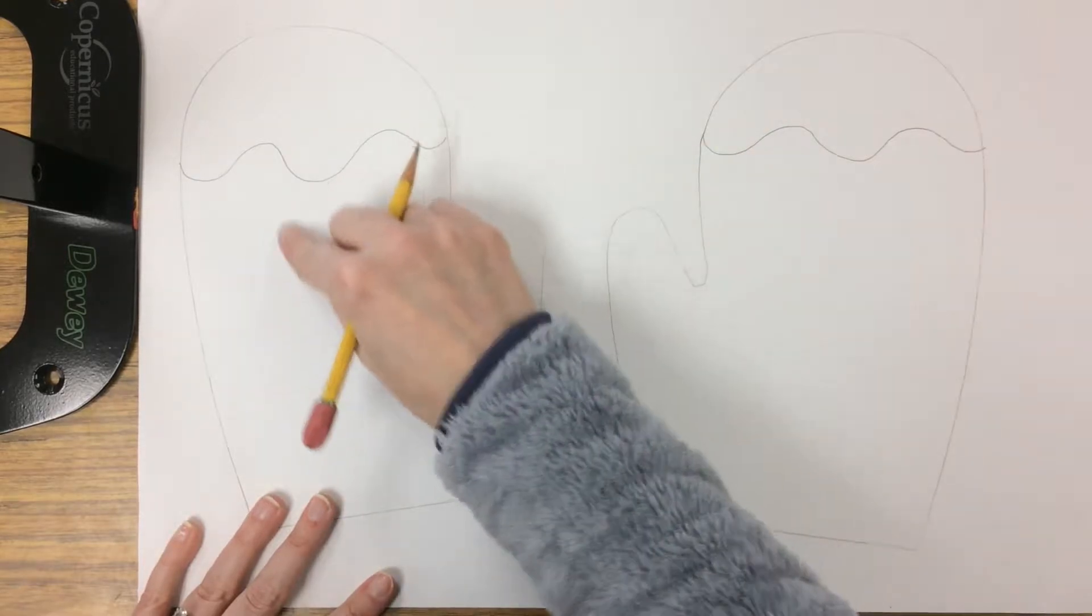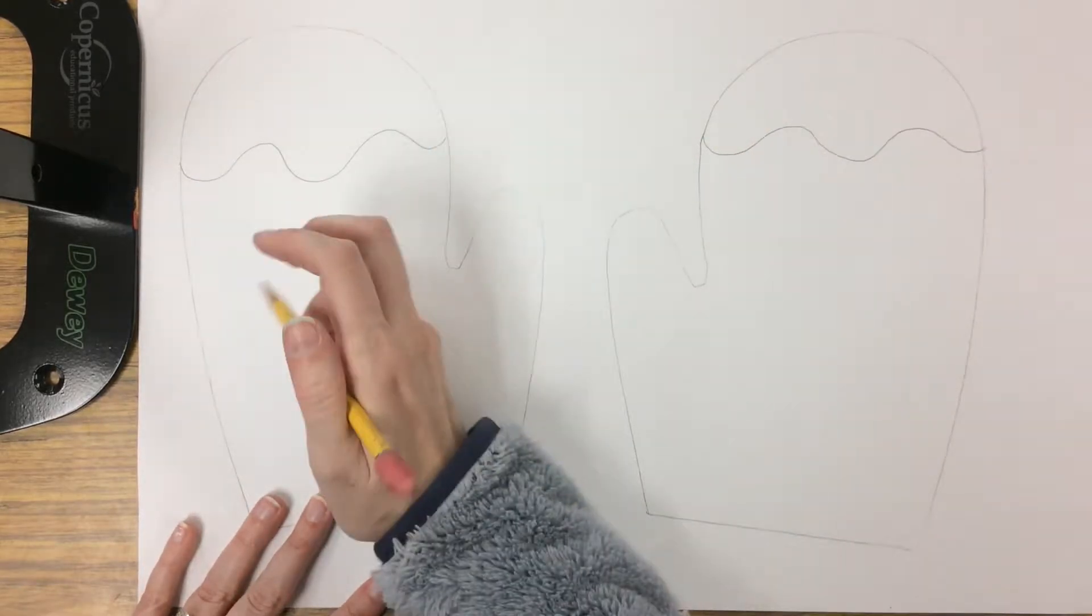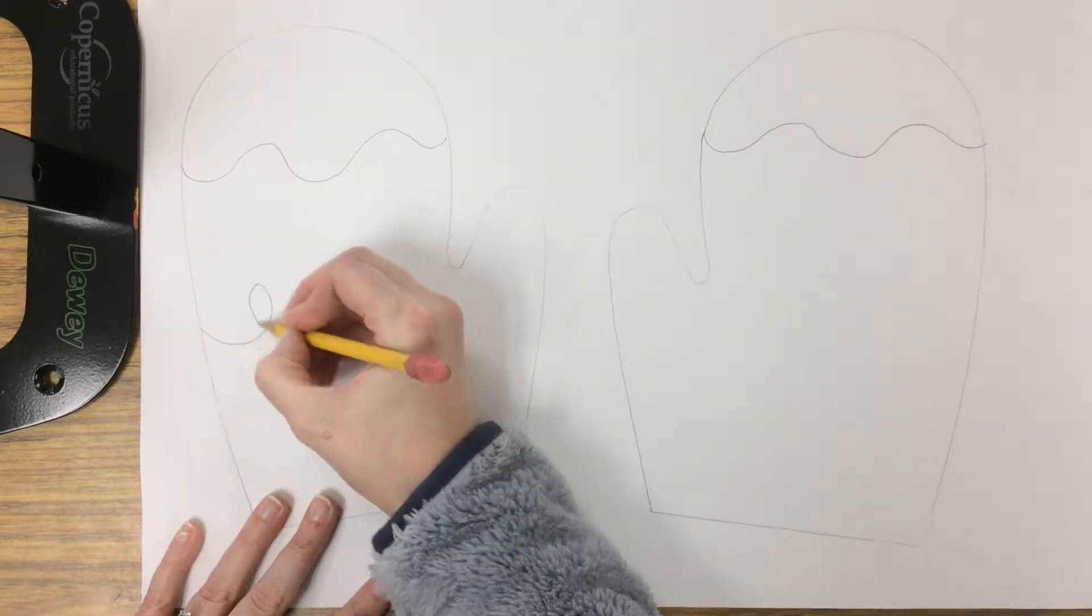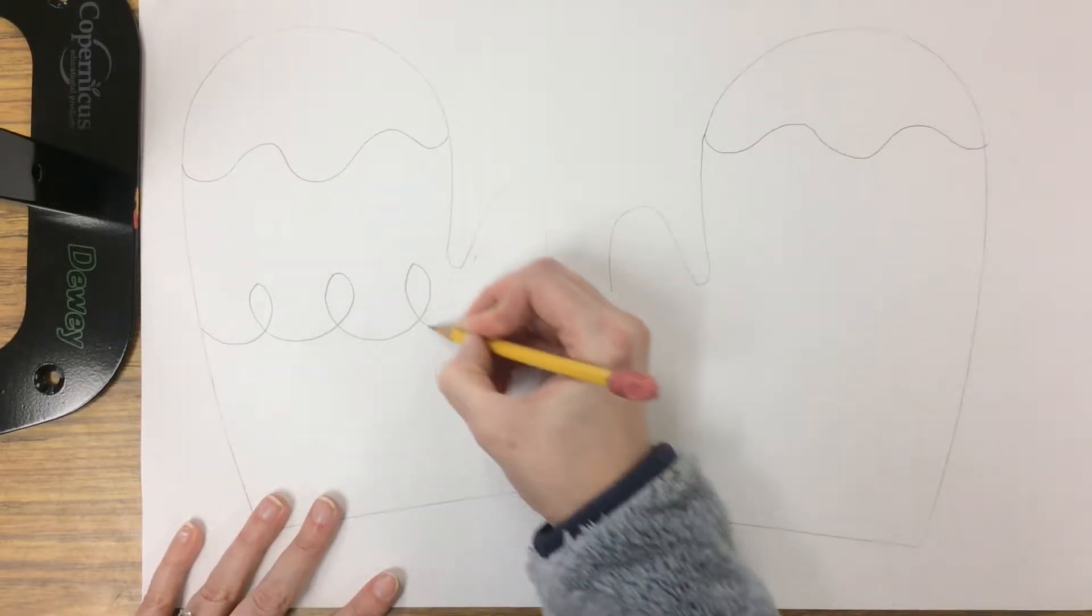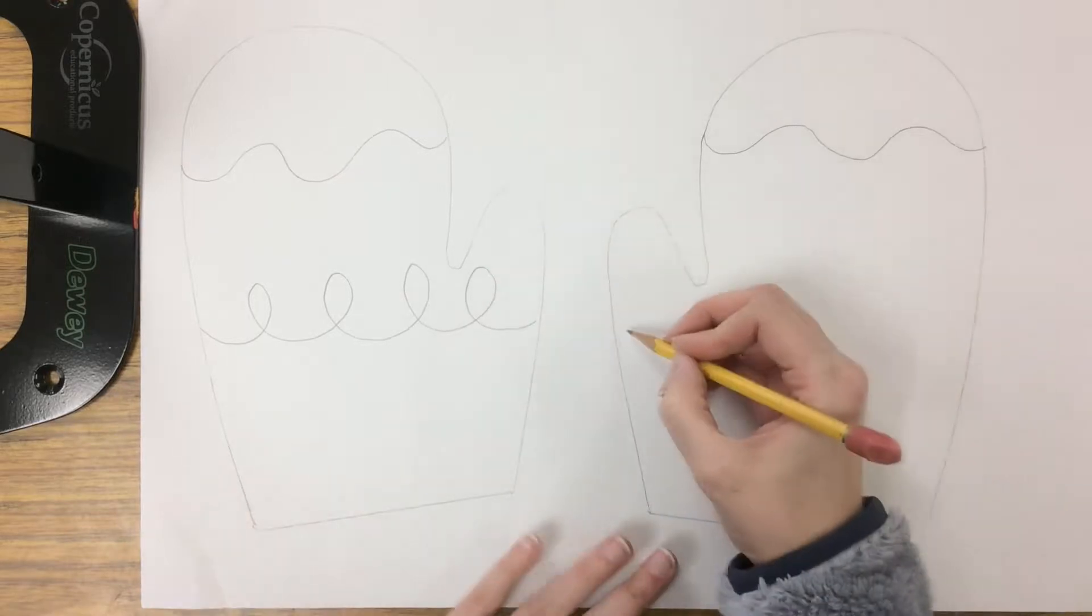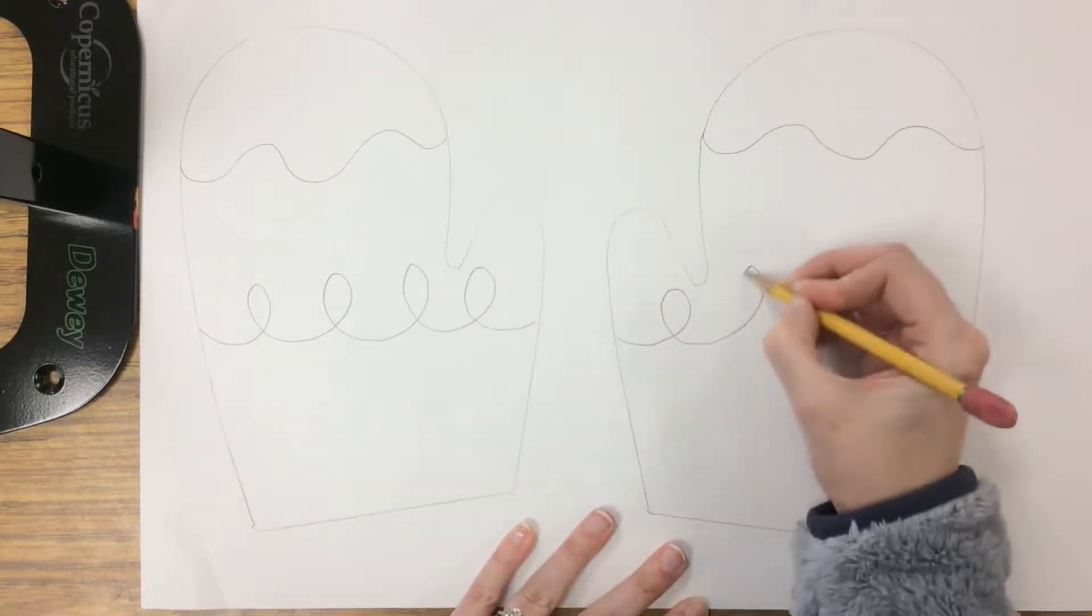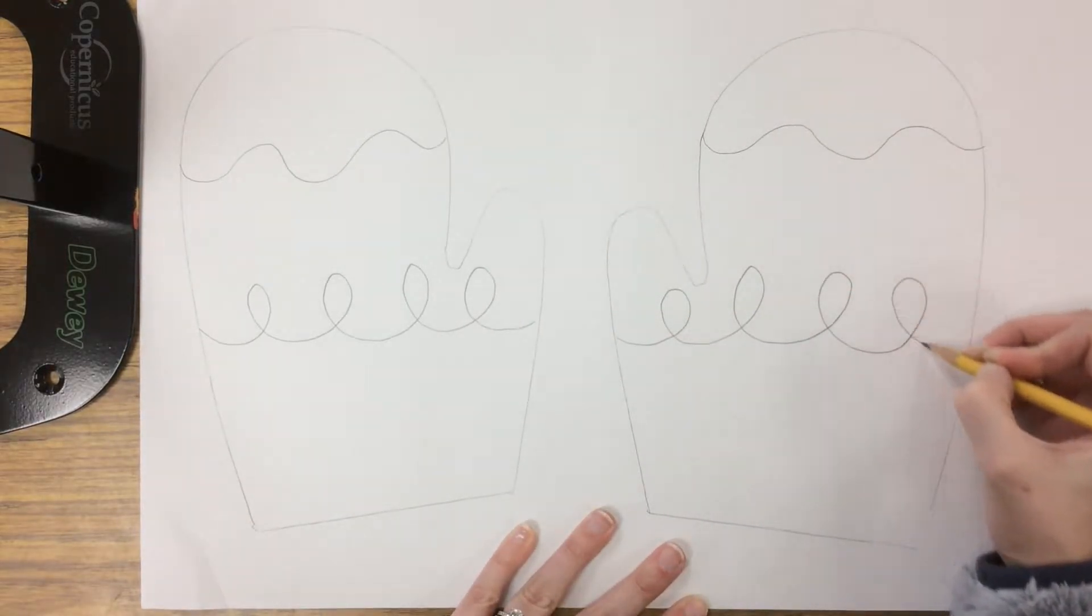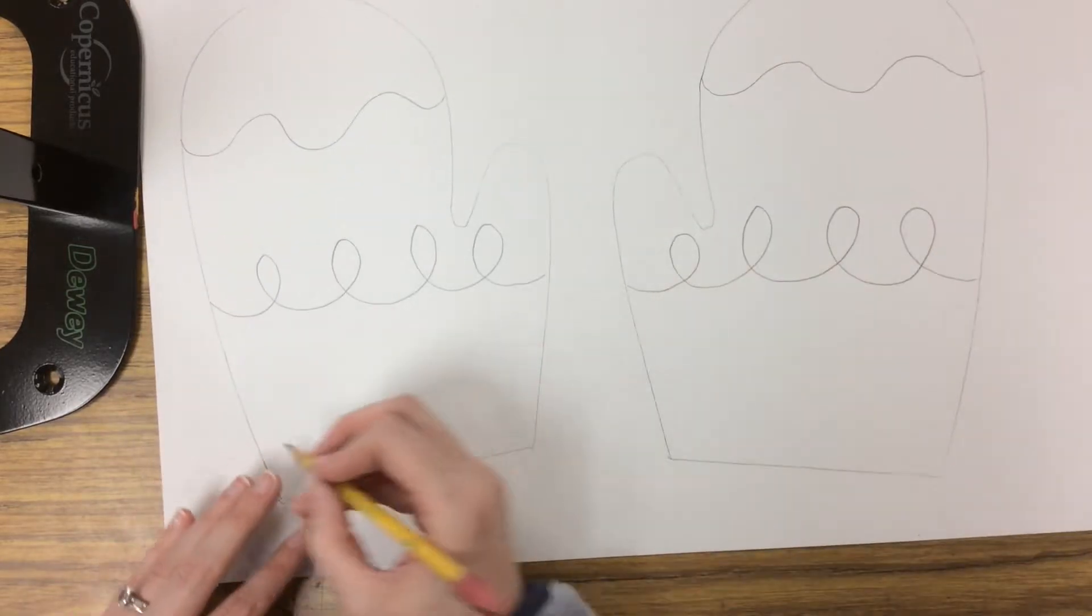And then leave some space and pick a different line. So I could do loopy. Loop, loop, loop. Same on the right mitten.